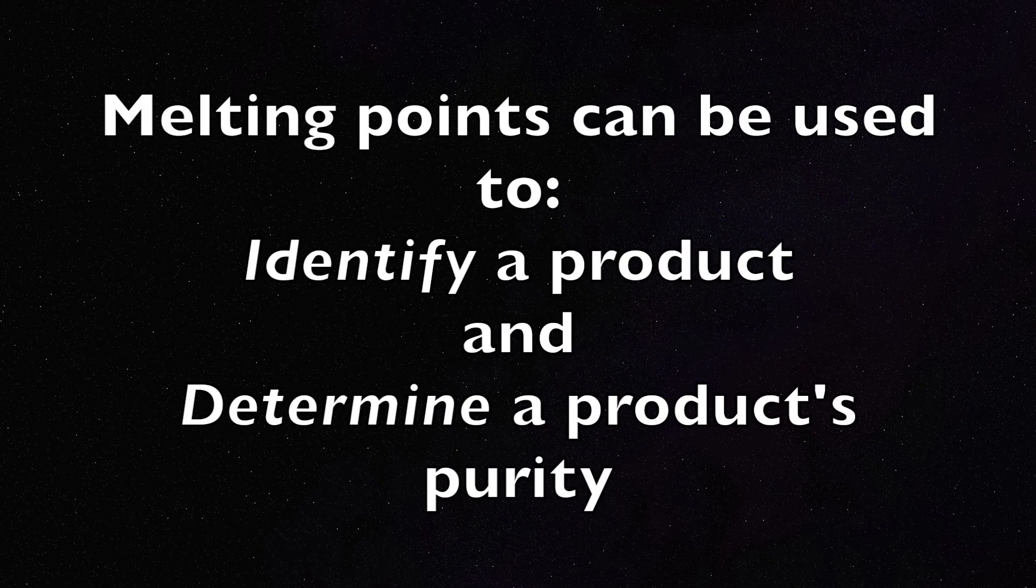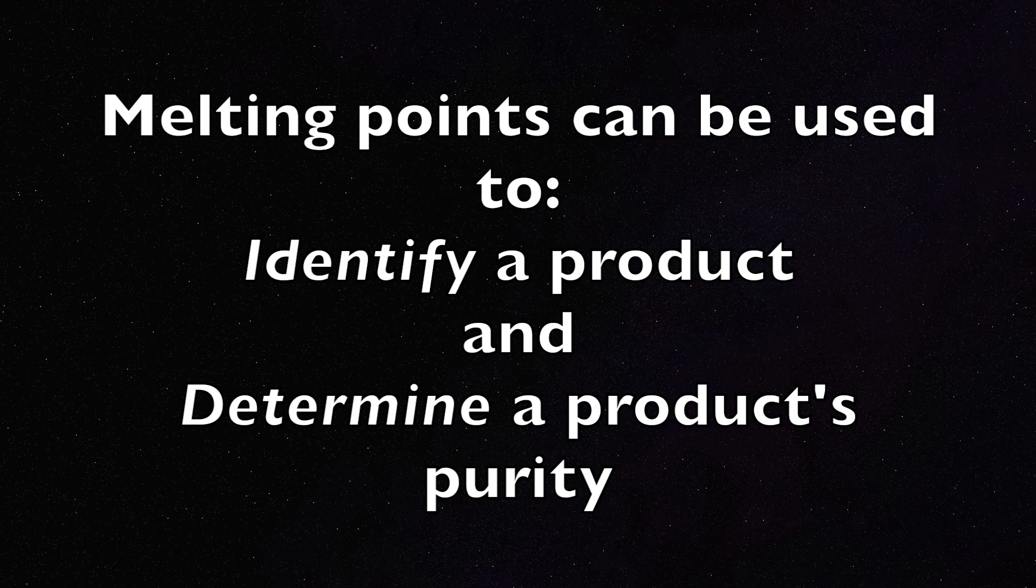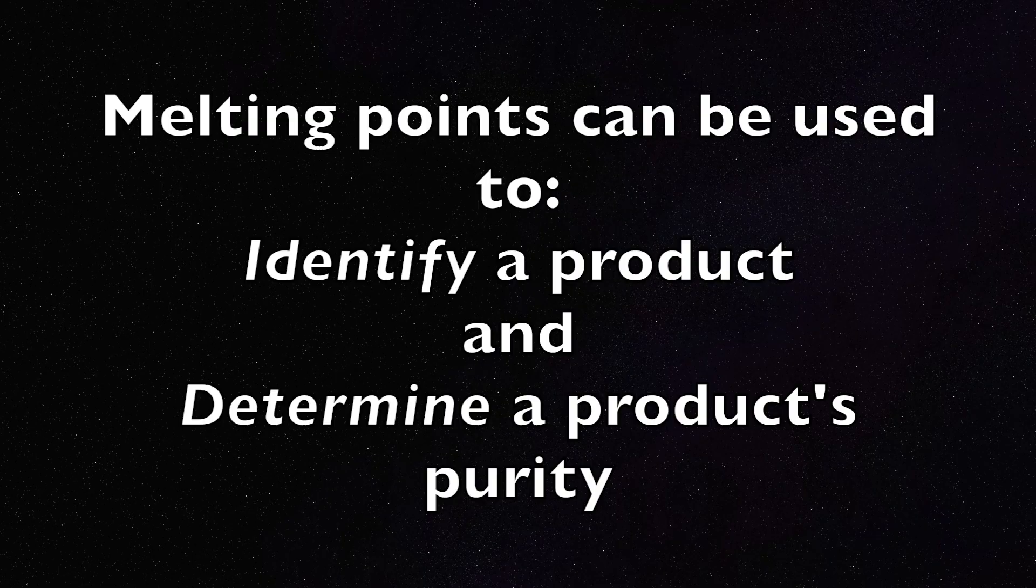The melting point is a useful property to obtain from products because it can help identify the product if it is unknown or determine the level of impurity in a known product. Pure samples have a narrow range with a 0 to 2 degree range, while an impure sample can have a melting point with over a 5 degree range and are typically much lower than pure samples.